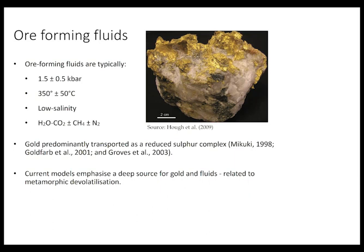First, we're going to have a quick review of the conditions in which gold is transported in orogenic systems. They tend to be medium pressure — 1.5 kilobars — moderate temperature, 350 degrees Celsius, plus or minus 50.